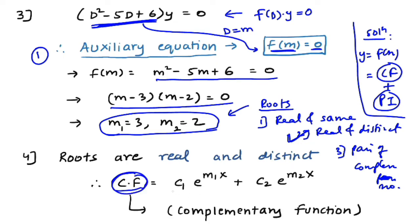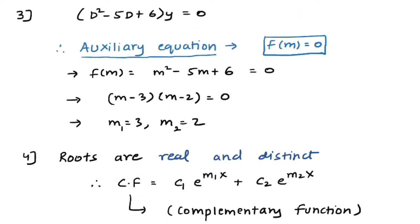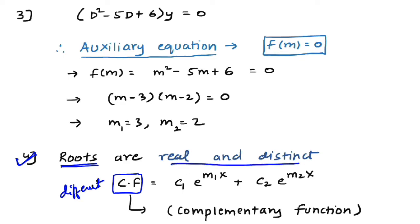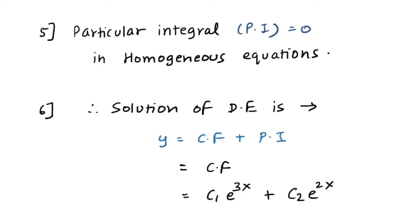The complementary function is always different for different root types. For real and distinct roots (Type 2), the complementary function is CF = c₁·e^(m₁x) + c₂·e^(m₂x). For real and same roots the CF differs, and for a pair of complex roots the CF takes yet another different form.